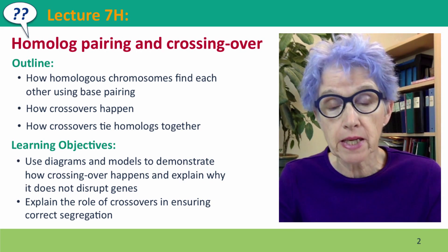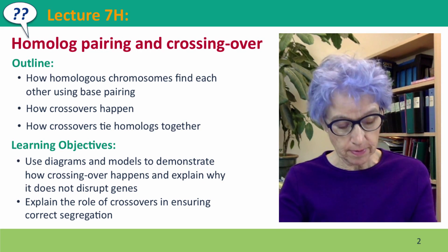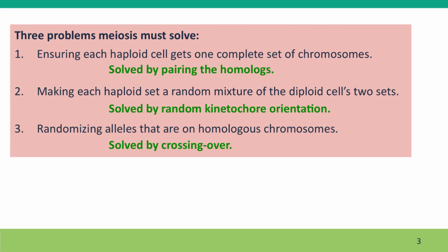All of this is mediated by base pairing. We've answered two of our three questions about how meiosis solves its problems. It's able to ensure that each haploid cell gets a complete set of chromosomes by first pairing the homologs and then using the same separate-the-partners strategy that mitosis uses.